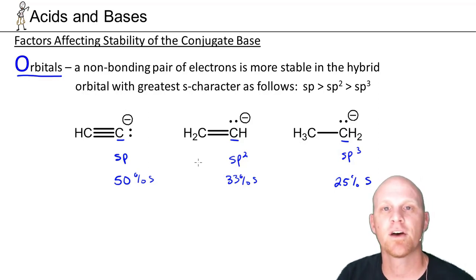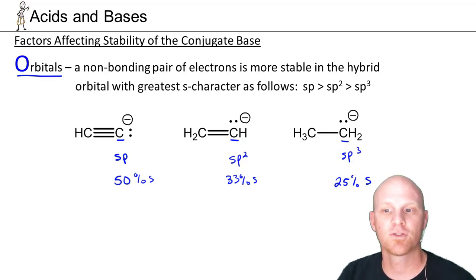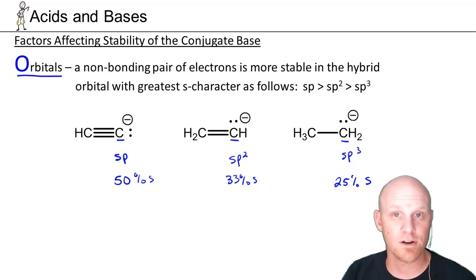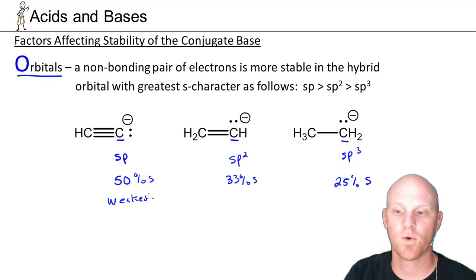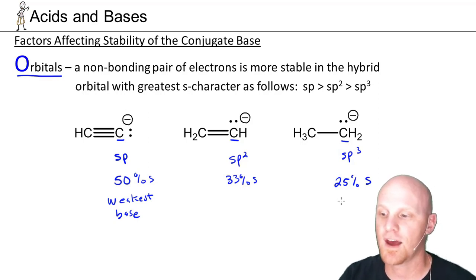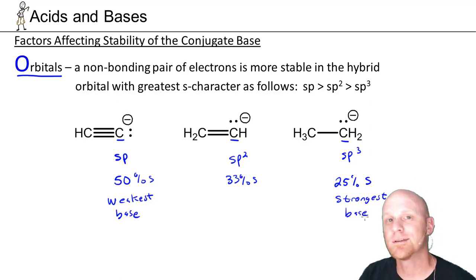Because sp-hybridized orbitals have greater s-character — 50% — the electrons are held closer to the nucleus on average, giving them lower potential energy. This makes them more stable and less reactive as a base. So an sp carbon is the weakest base of the three, and an sp3 carbon with the lowest s-character is the strongest base. That's the orbitals rule — it doesn't come up often, but it's important to understand for those cases where the other rules can't distinguish between bases.